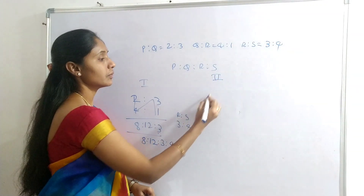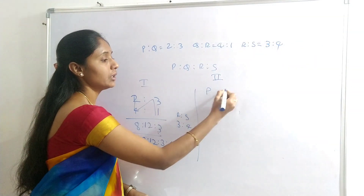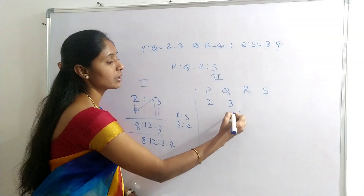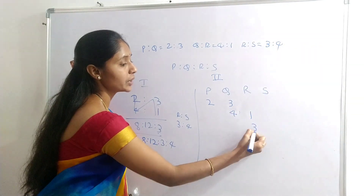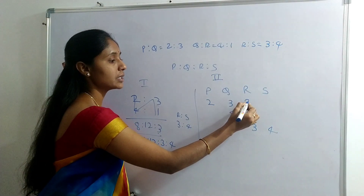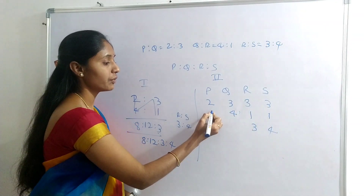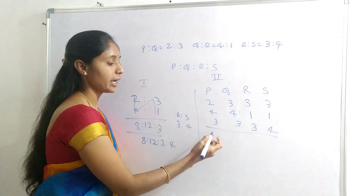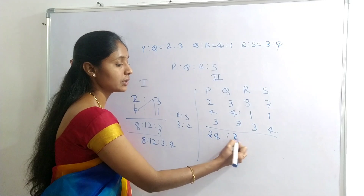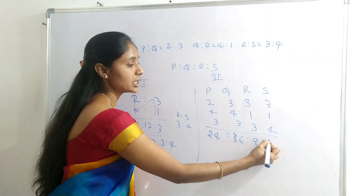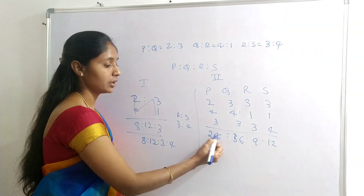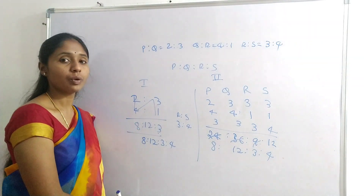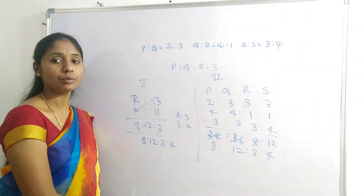Second method for PQRS: Write P:Q = 2:3, Q:R = 4:1, R:S = 3:4. Shift 3 to R's place, then shift 4 and 3. Multiply: 4×2 = 8, 8×3 = 24; 4×3 = 12, 12×3 = 36; 3×3 = 9; 4×3 = 12. Multiplying with common factor 3 gives P:Q:R:S = 8:12:3:4.